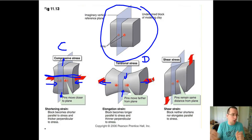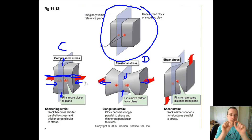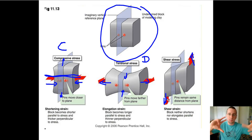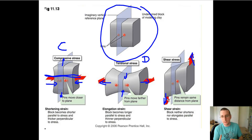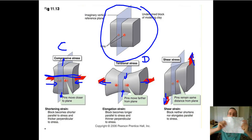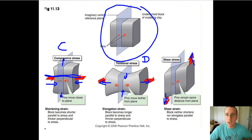Tension is going to separate the pieces of rock by stretching them, while compression is going to bring the pieces of rock closer together. Now, in shear stress, the actual distance between the pieces of rock will not change, but it will deform the rock, because what happens with shear stress is when one side is pushed in one direction while the other side is pushed in the other direction. The pressure is applied in different directions on different sides of the rock, causing the block to neither shorten nor elongate parallel or perpendicular to the stress, but it will cause the rock to change its overall shape.